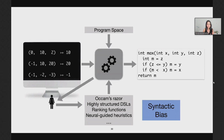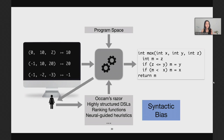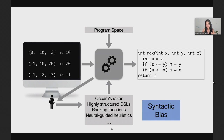In inductive program synthesis, most existing work attempts to guide the search for the desired program by applying inductive biases on the program space, such as Occam's Razor — which in this context corresponds to finding the smallest program — or by designing highly structured DSLs or domain-specific ranking functions, or more recently by using neural-guided heuristics, all with or without interaction with the user. It turns out, if you look at them carefully, all of these — including the ranking functions and search heuristics — are almost always based on syntactic features of programs.